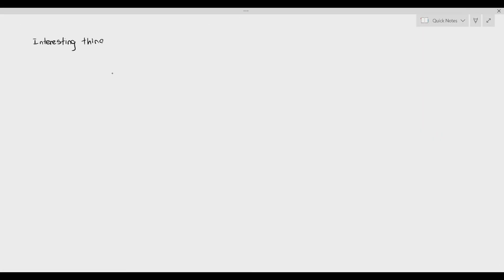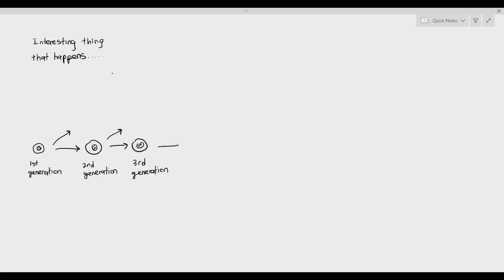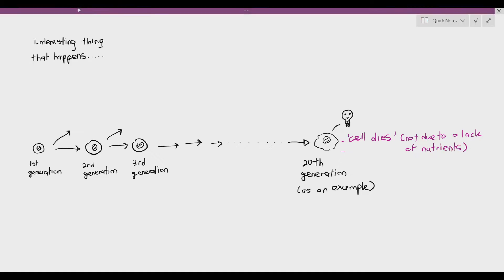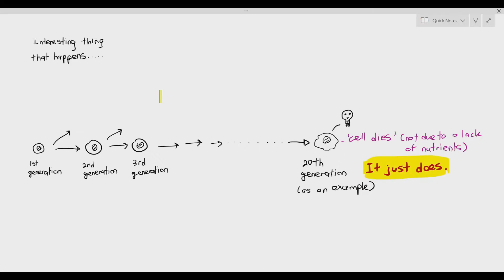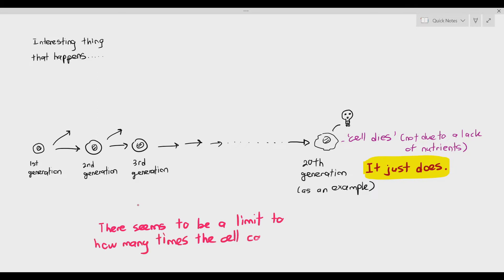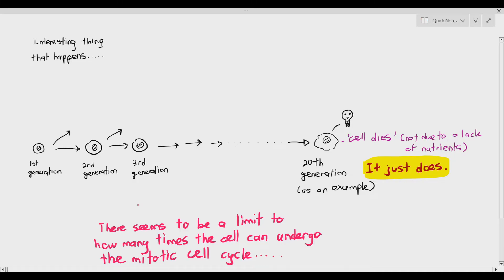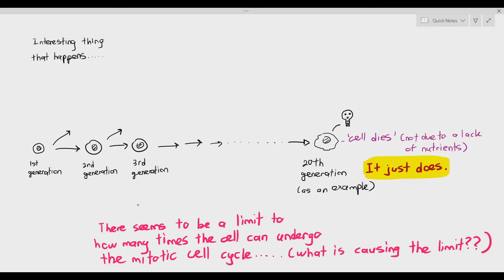Assuming we start off with the cell as the first generation, and every time it undergoes mitosis it becomes the second generation, third generation, and so on — when the cell, especially a skin cell, reaches, for example, the 20th generation, the cell will just die. The cell dies not because of a lack of nutrient; it just does. Different cells will start to die at different generations. There seems to be a limit to how many times a cell can undergo the mitotic cell cycle. It will undergo the mitotic cell cycle until it reaches a certain generation where the cells die off. That limit comes in the form of telomeres.